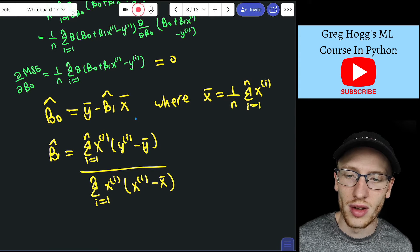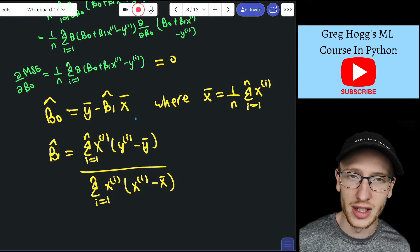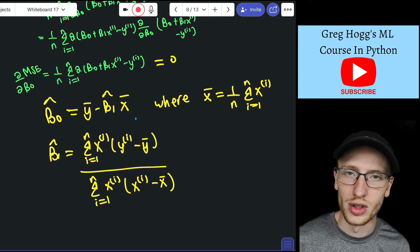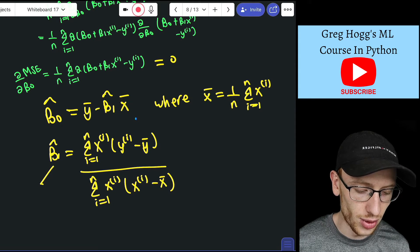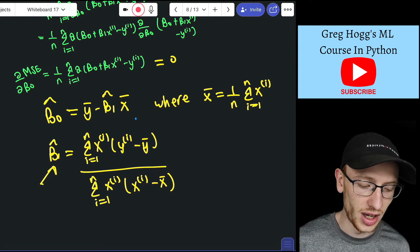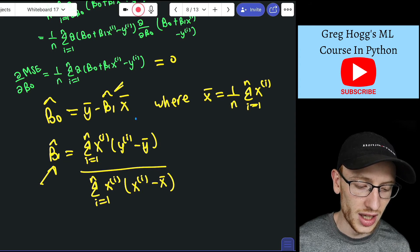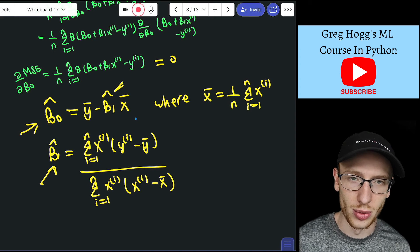So if we have some data, if we have x's and y's, then we can draw a line using this formula to get beta1, and then we'd have a beta1, so then this is a number, and then we could get one for beta0 as well.